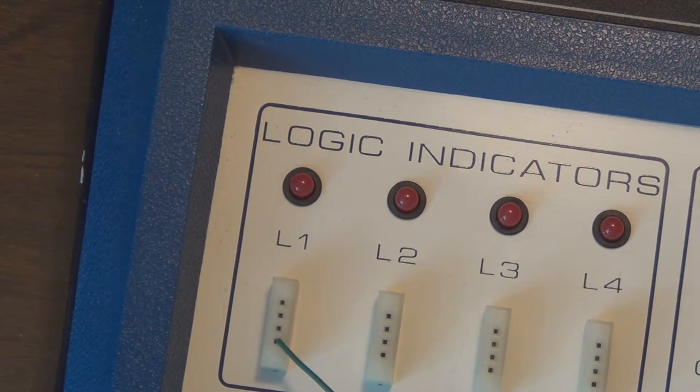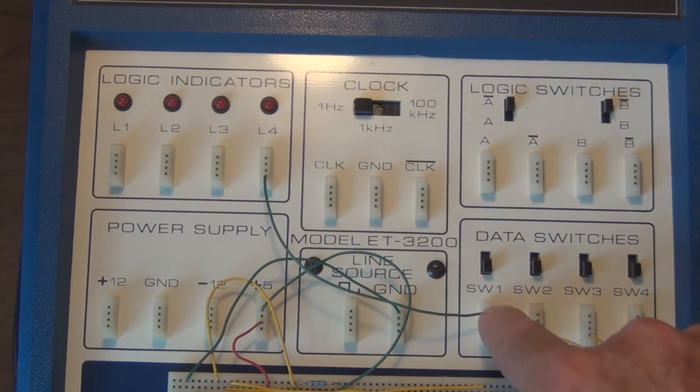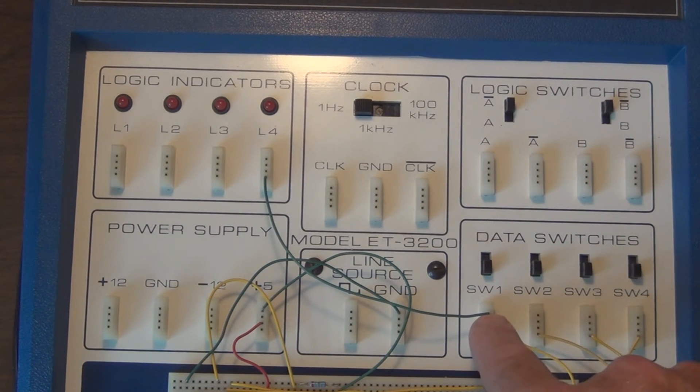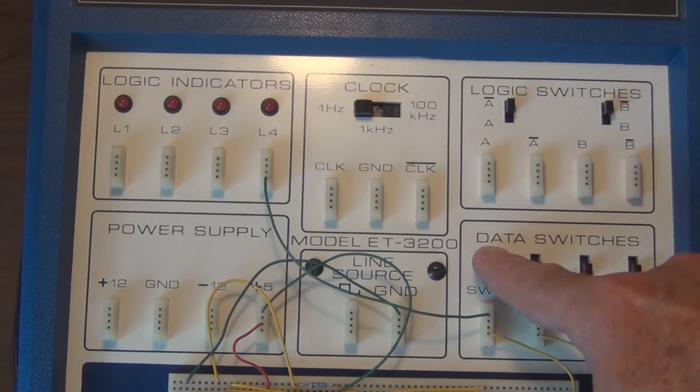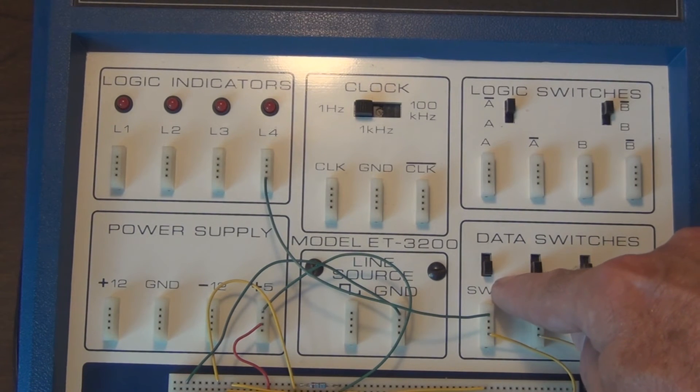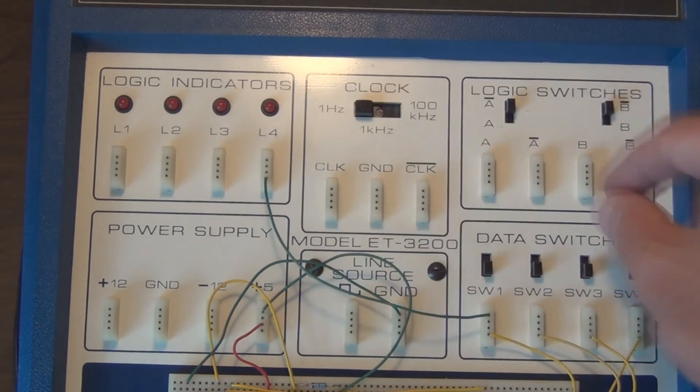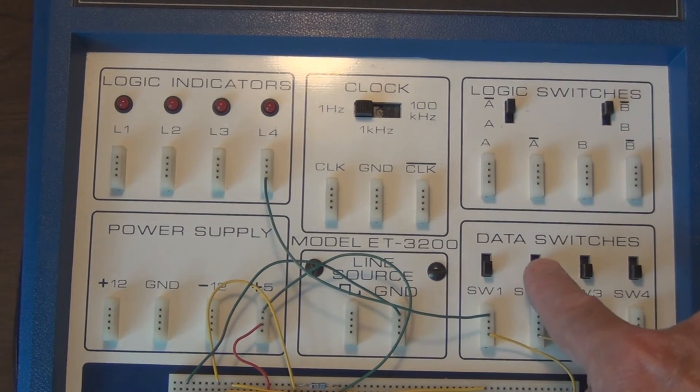You can see here I've hooked the wire up from this data switch to the LED, and you can demonstrate this represents a logic zero. When you switch it up, it will represent a logic 1, 5 volts, and turn this LED on.